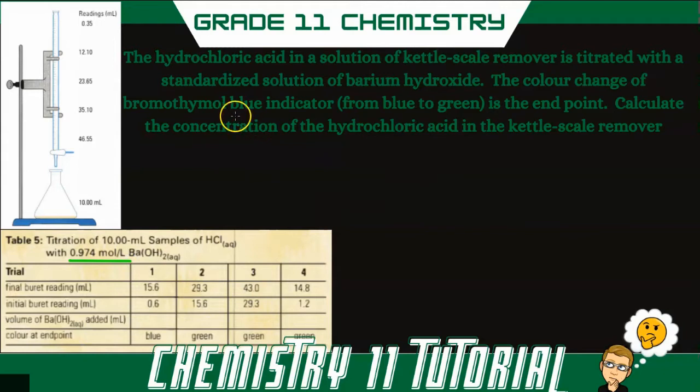Now the color change of bromothymol blue indicator, which is what we're using, is from blue to green at the endpoint. So we need to calculate the concentration of that hydrochloric acid in the Kettle Scale Remover.